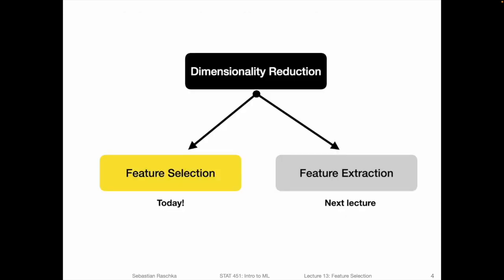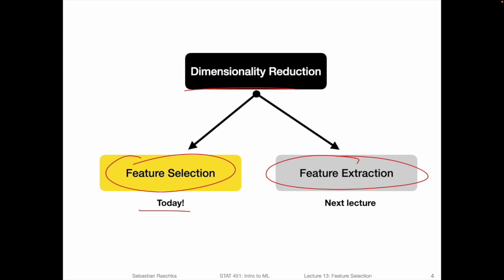To give you just a brief overview again: dimensionality reduction can be structured into two sub-problems. One is feature selection, which is the focus of today. And then there's feature extraction — the combination of features or extracting feature subsets from raw data. For example, in the case of the iris dataset, someone took measurements of flowers, possibly based on flower images, to extract features like sepal length, petal length, sepal width, and petal width. This is a topic we will discuss in more detail in the next lecture.